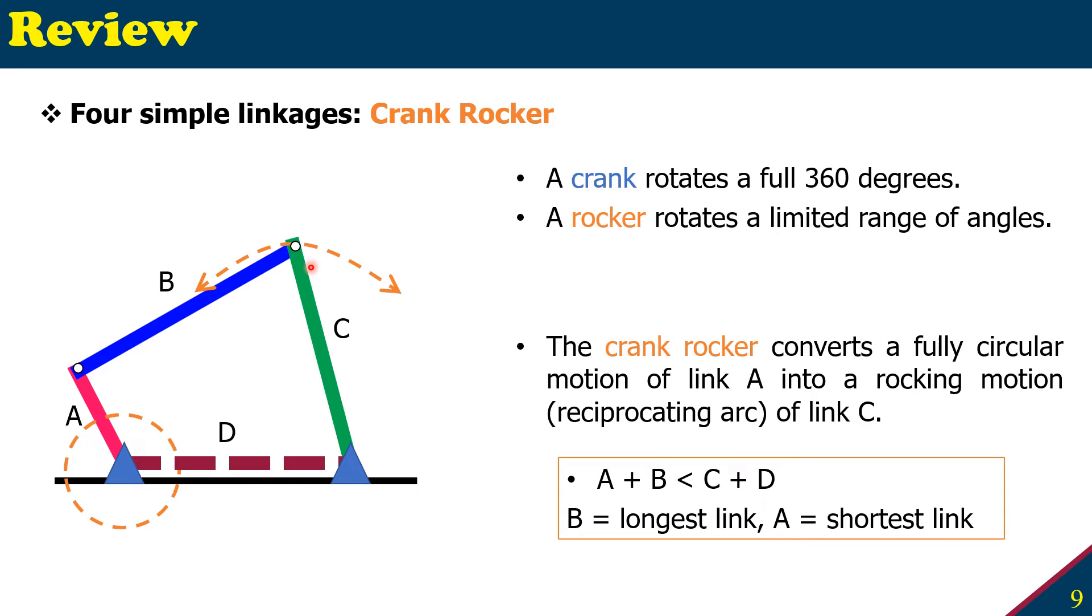And if we apply, remember, Grashof's law, the sum of the longest and shortest length, which here A is the shortest and B is the longest, the sum of them has to be less than or equal to, in this case less than, the other lengths. This is the law for this crank rocker to have continuous motion.